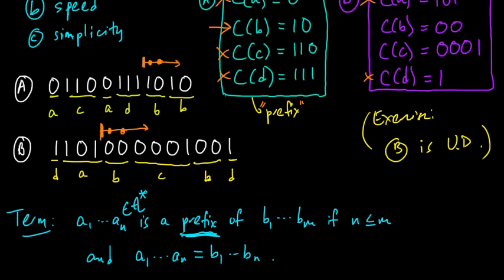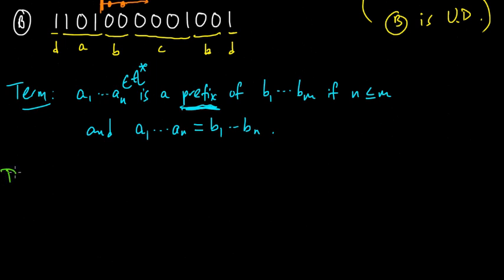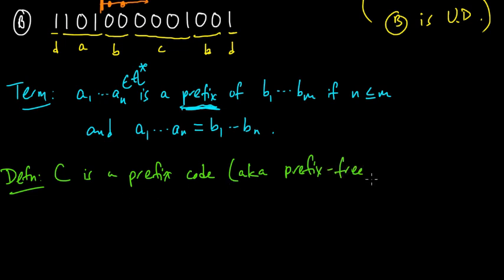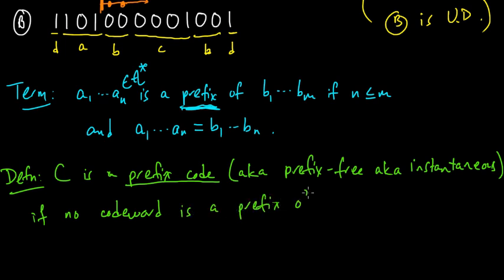And a prefix code, so now we have the definition. C is a prefix code, or let me say, put in parentheses, aka, prefix, there's all kinds of different ways to call these things. Prefix or sometimes people say prefix free, sometimes people say instantaneous code, those all mean the same thing. If no codeword is a prefix of another. If no codeword is a prefix of another codeword. So C is a prefix code if no codeword of C is a prefix of another codeword of C.